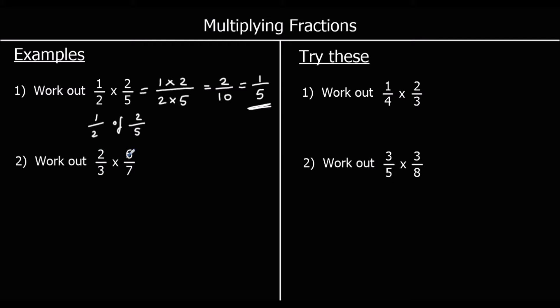Question two: we've got two-thirds times six-sevenths. We're going to times the top — two sixes are twelve. And times the bottom — three sevens are twenty-one. We can simplify our answer because twelve and twenty-one are both in the three-times table. Twelve is four threes and twenty-one is seven threes. So we can divide the top and the bottom both by three, and we get four-sevenths. So two-thirds times six-sevenths is four-sevenths.